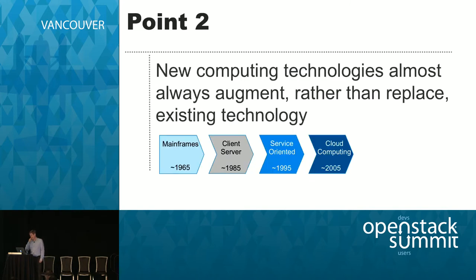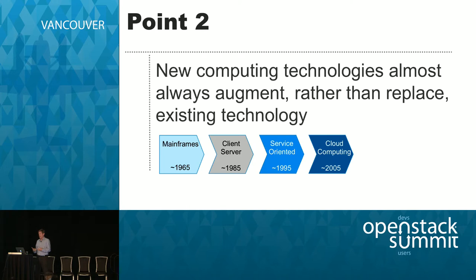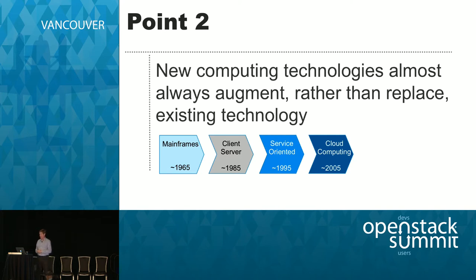We've really seen this before. The cloud is not the first revolution in computing, not the first sea change that everyone says will change the way people build software. If you look back at historic changes in computing, new technology almost always augments rather than replaces old technology. I've got a couple of examples of changes that have occurred over time, and I'm going to go through a few of them — partially because I think it's entertaining to look back at past changes.